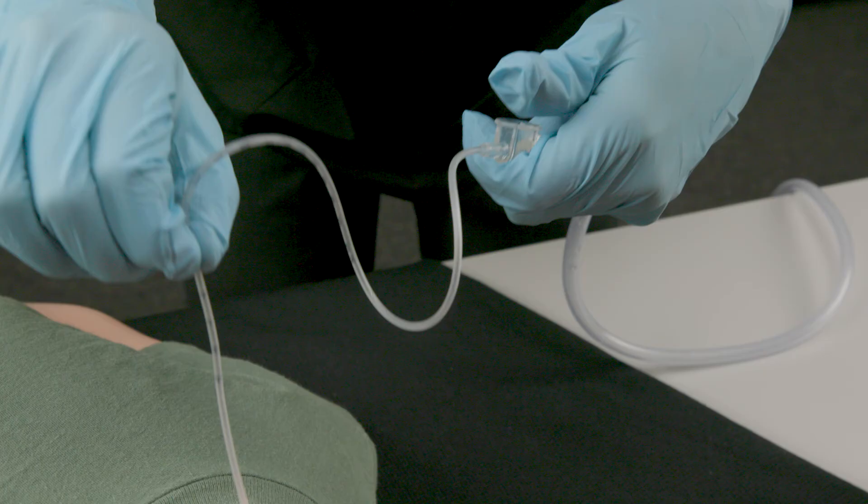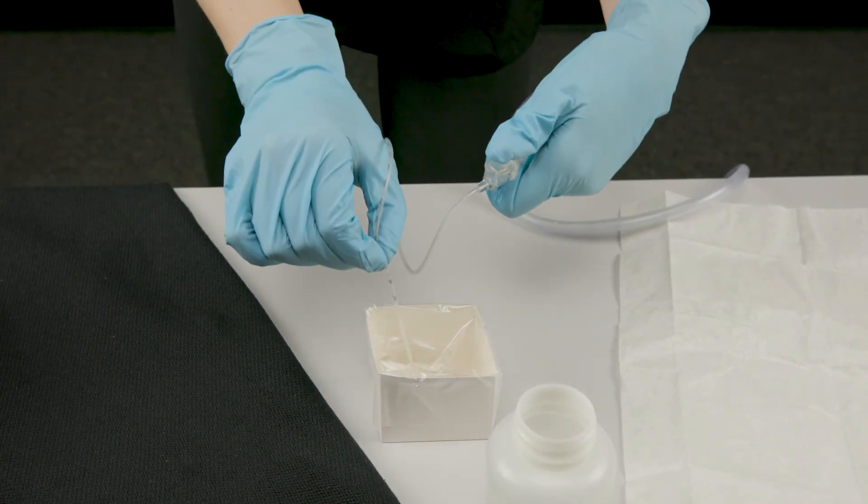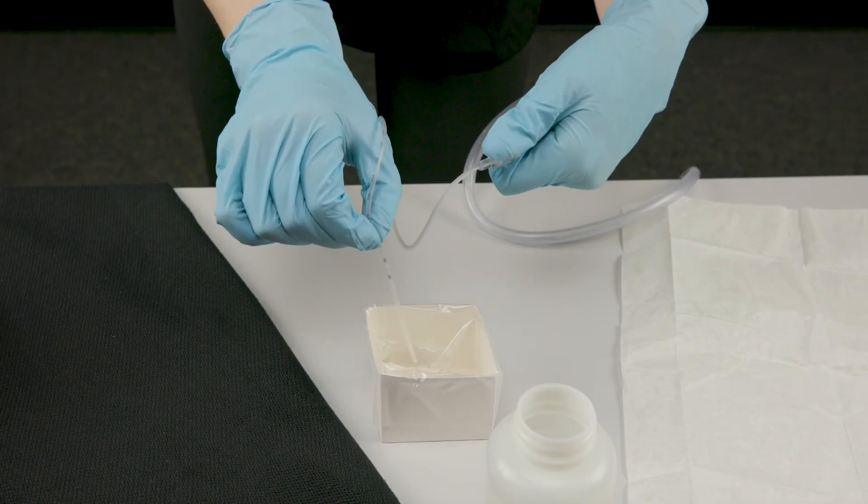After you remove the suction catheter from the trach tube, insert the tip into the sterile water basin. Block the thumb port and suction water through the catheter. This rinses secretions from the catheter and tubing into the suction canister.